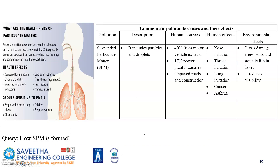The next pollutant is SPM — that is, suspended particulate matter. Almost 40% comes from motor vehicle exhaust and 70% from power plant industries. The health issues associated with suspended particulate matter include nose irritation, throat irritation, lung irritation, cancer, asthma, and so on.